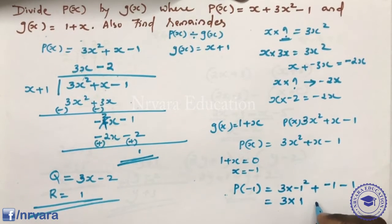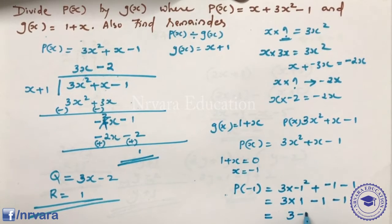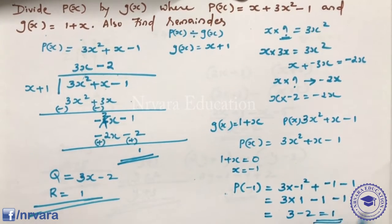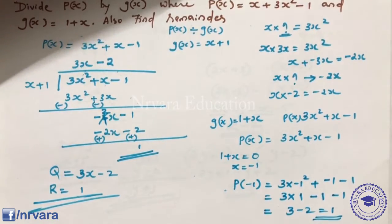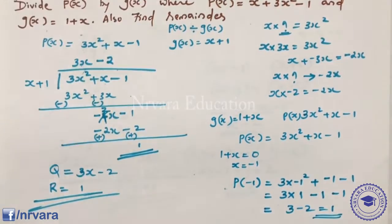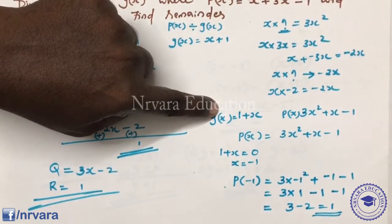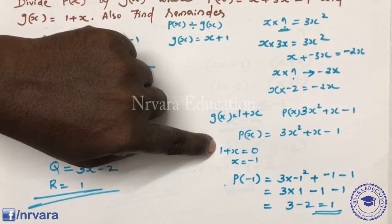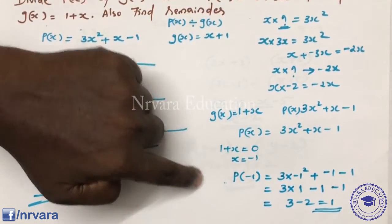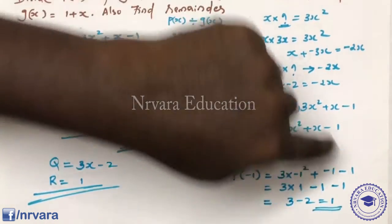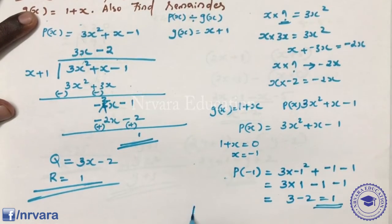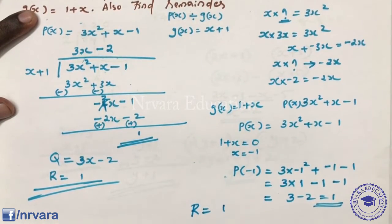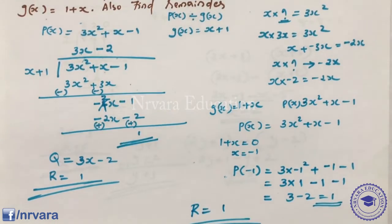3 into minus 1 square is 3, then minus 1, then minus 1. So 3 minus 1 minus 1 equals 1. The remainder is 1.